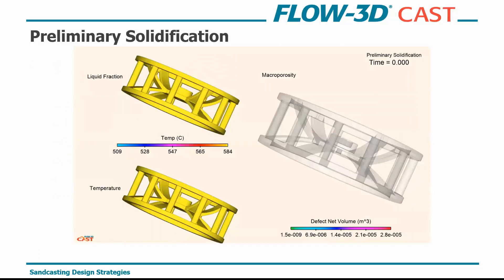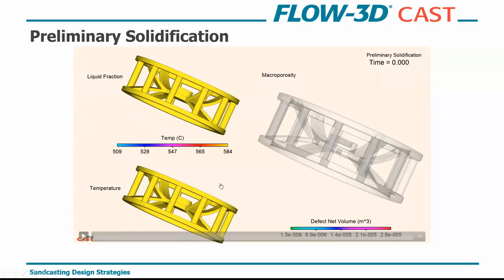We start by selecting material and mold properties, using the simplified solidification model, and looking at just the part with no rig. We've told the solver to fill the part with metal and see how it solidifies — what are the inherent flaws in design for castability and what do we need to watch out for when placing risers and gating. We look at overall liquid fraction, temperature gradients, and the porosity prediction tool.